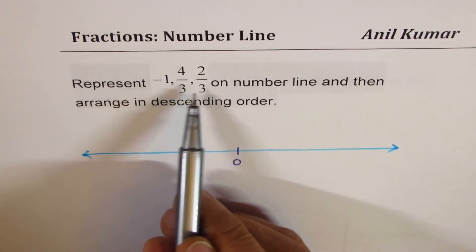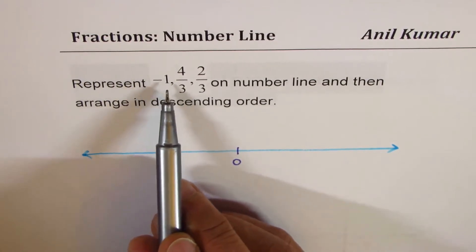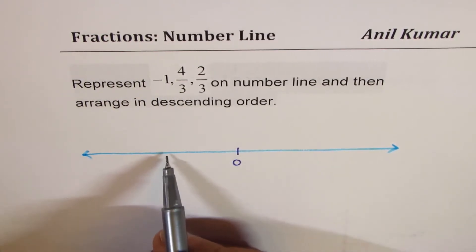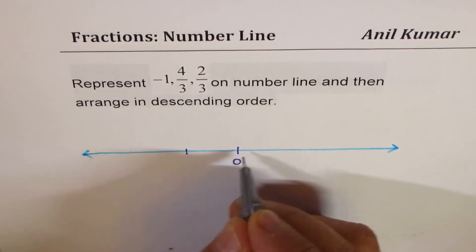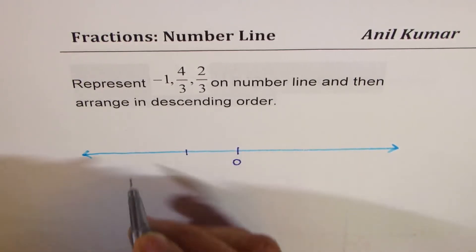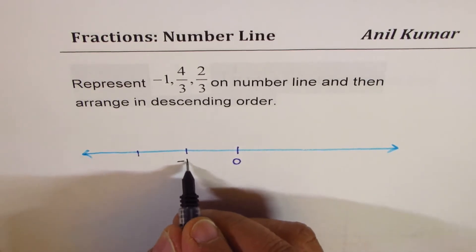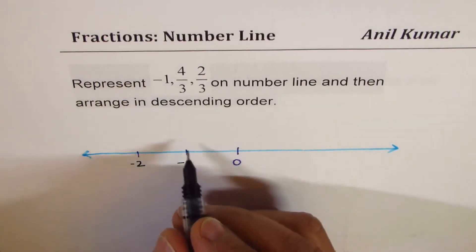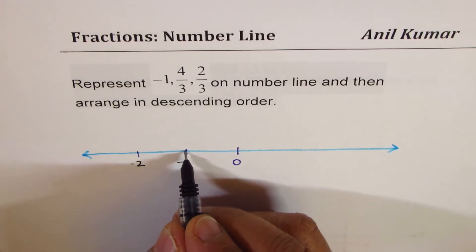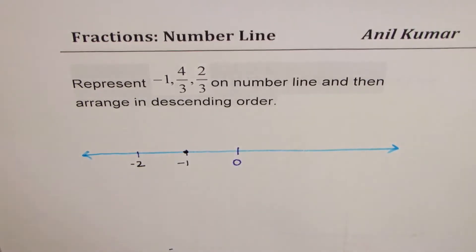We have to represent -1. Negative numbers are on the left side of a number line, so on the left side let's say that is negative 1, and this is negative 2. The first number, negative 1, could be marked here — that is negative 1.